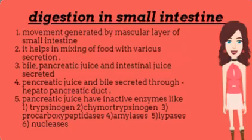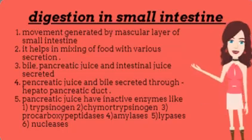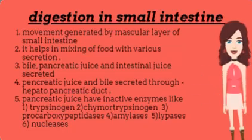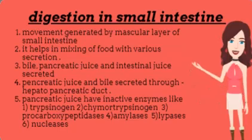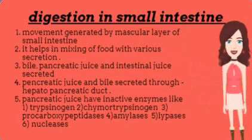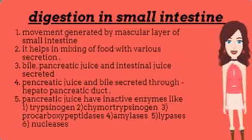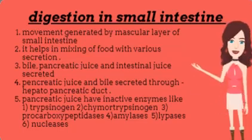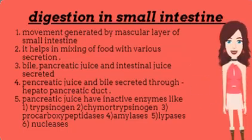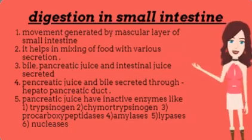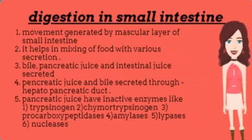Chemical digestion in the small intestine involves movement generated by the muscular layer of the small intestine, which helps in mixing food with various secretions. The small intestine secretes juices like bile, pancreatic juice, and intestinal juice. Pancreatic juice and bile are secreted through the hepatopancreatic duct.